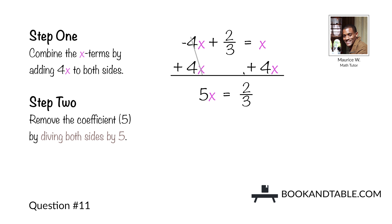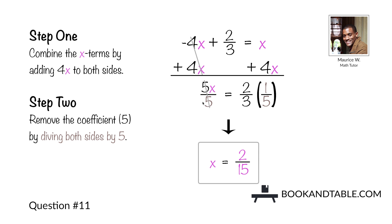We have x plus 4x, leaving us with 5x on the other side. Now we want to remove the coefficient 5, so we divide both sides by 5, or multiply both sides by the reciprocal, 1/5. We wind up with x is equal to 2 over 15.